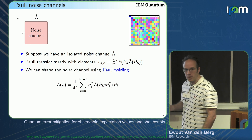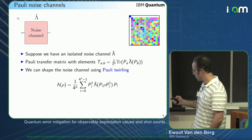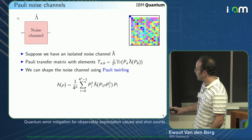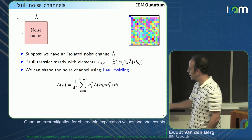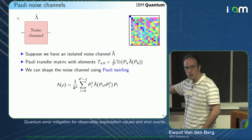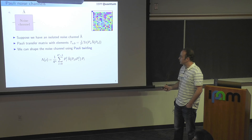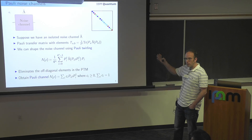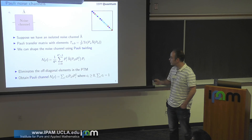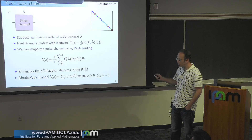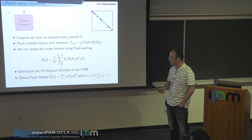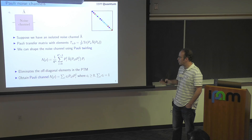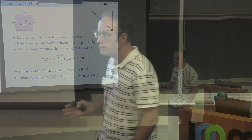What we can do is try to shape the noise by applying Pauli twirling. For a given Pauli P, you apply it on the state before the noise channel and then apply it again. You do this for all Paulis and average. On average, this eliminates the off-diagonal elements in the Pauli transfer matrix and you get a Pauli channel for noise. That noise channel is written as the sum of Pauli terms applied on the state, where the coefficients are non-negative and sum to one.